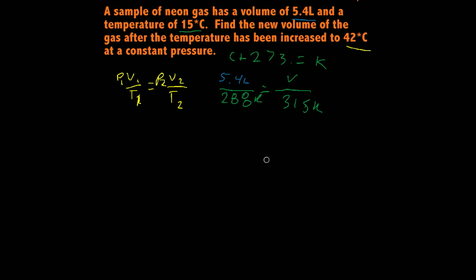I like to do the cross-multiply method with our formula here. So basically what that means is that V1 over T1 equals V2 over T2. And I'm going to cross-multiply these. I'm going to multiply T1 times V2 and T2 times P1.